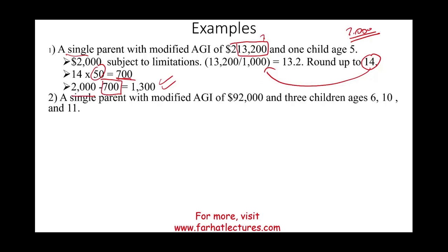Let's take a look at another example: a single parent with a modified AGI of $92,000 with three children ages 6, 10, and 11. Three children, each at $2,000. The individual is below $200,000, so no phase-out limitation applies. The amount of credit is $6,000.